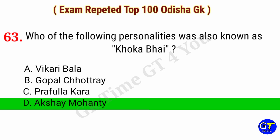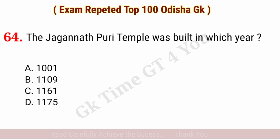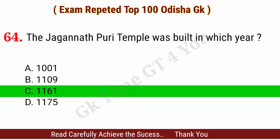Question number sixty-four: The Jagannath Puri Temple was built in which year? Right answer, option C: 1161.